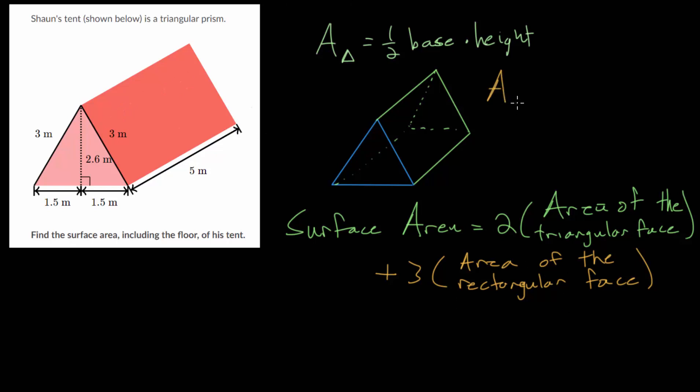And we also need the area formula for a rectangle. So the area of some general rectangle is just the length of the rectangle, multiplied by the width of the rectangle. So let's use these formulas to figure out the surface area.